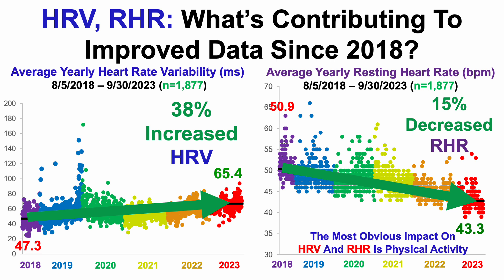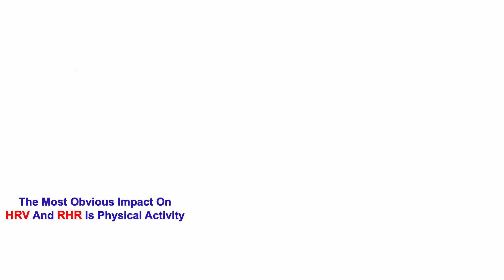In today's video, we'll take a look at what may be contributing to improved data for heart rate variability and resting heart rate since 2018. The most obvious impact on heart rate variability and resting heart rate is physical activity, so let's start with that.